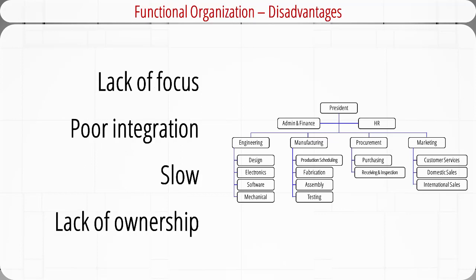One disadvantage of using functional organization is lack of focus. Each functional unit has its own core routine work, and project responsibilities can get pushed aside to meet primary obligations. The same project has different priorities for different units — for example, the marketing department may consider the project urgent while manufacturing considers it only of secondary importance, causing tension between departments.